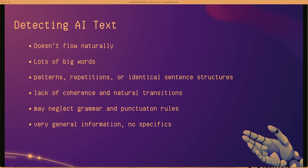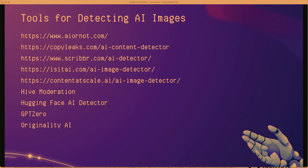For detecting AI text: it doesn't flow naturally — it sounds weird and stilted. It often uses lots of big words, like it was run through a thesaurus. It'll have patterns, repetitions, or identical sentence structures. There'll be a lack of coherence and natural transitions — one sentence about one topic, the next about something totally different with no transition. It may neglect grammar and punctuation rules. The information will be very general with no specifics — a whole article that never dives deeper than the headline. And there are lots of tools out there for detecting AI images and text.